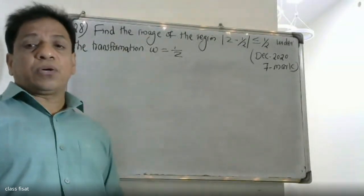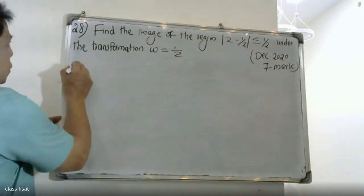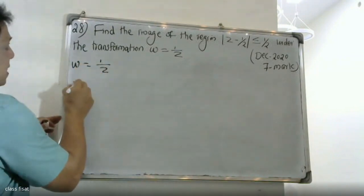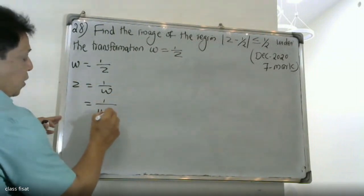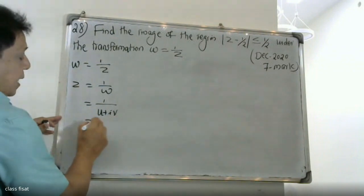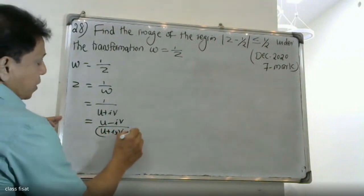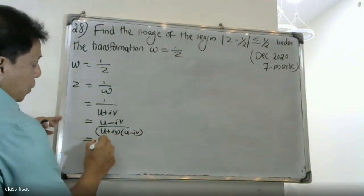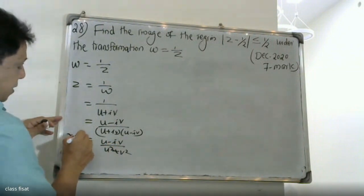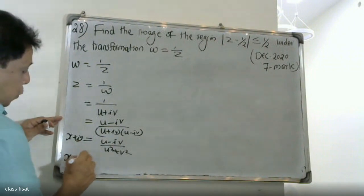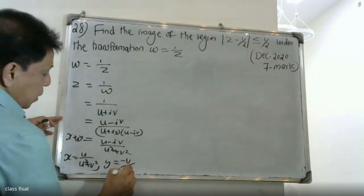Here is the problem. We apply the transformation w = 1/z. By definition, 1/z equals 1 over (u + iv), which gives (u - iv) divided by (u² + v²). Therefore, x equals u divided by (u² + v²), and y equals minus v divided by (u² + v²).